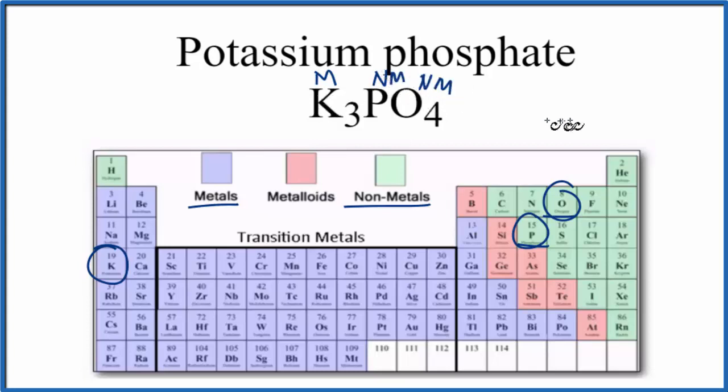When we have a metal and non-metals, that is almost always an ionic compound. So based on the periodic table, potassium phosphate, that's ionic.